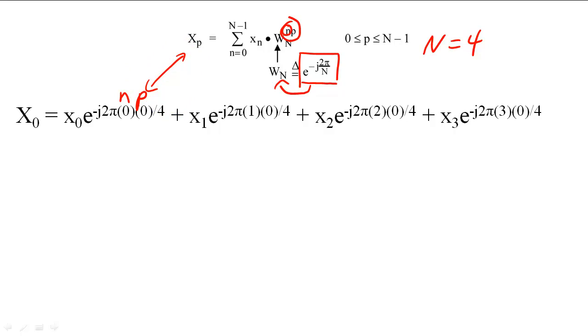When the DFT sample index is zero, the DFT sample is simply equal to the summation of all four time samples. This result should not be surprising, since the first DFT sample corresponds to the DC component of the signal.